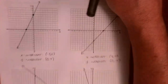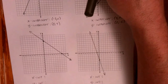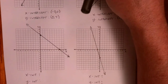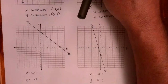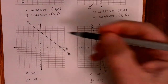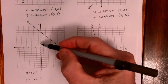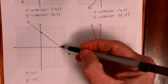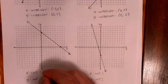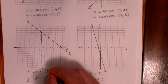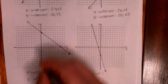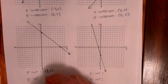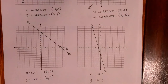Two more. Notice I have abbreviated x-intercept just as x-int. That's usually how you'll see it — they're abbreviated as int. I'm going x-intercept first. It looks like I'm going to the right eight, so my point is eight, zero. That is my x-intercept. And then my y-intercept is zero, seven, because I stayed at zero and went up seven.